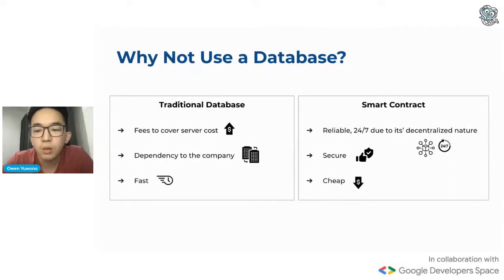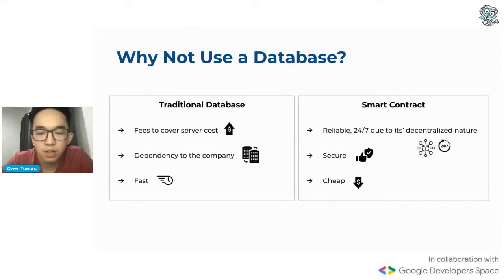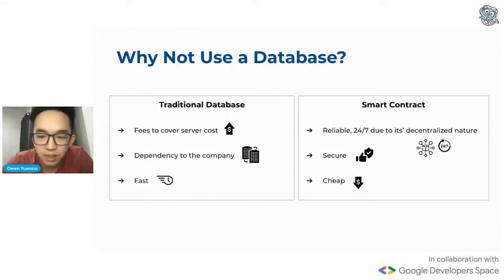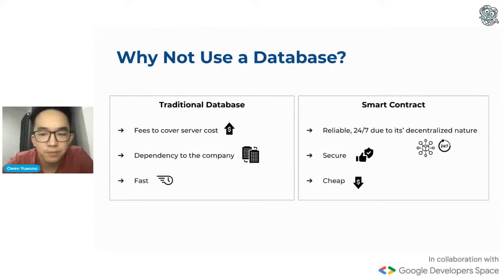It eliminates the time cost and the price cost of the third-party middleman. There's also a lot of questions on why don't we just use a traditional database like SQL or NoSQL. That's a really good question. But the thing is, with a database, there would also be a host server or host company, so there could be fees to cover the server cost and dependency on the company. Their server could go down and they probably use your transaction data. In summary, smart contracts aim to provide reliability, security, and removing third-party costs. However, blockchain is not a really fast system due to its peer-to-peer nature, so it's not uncommon to use database and blockchain side by side.